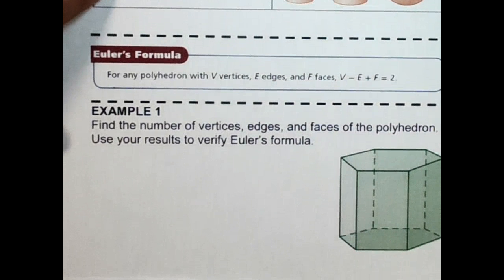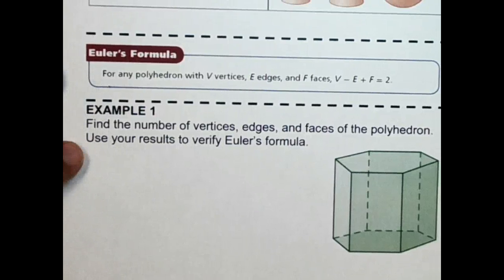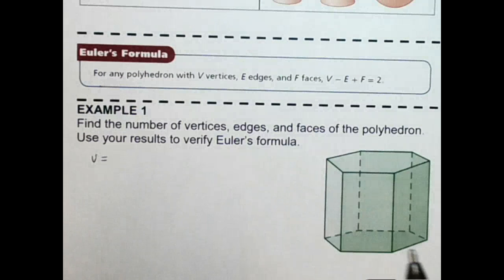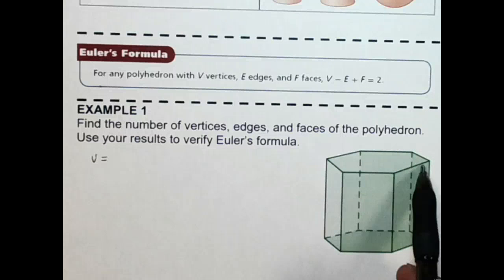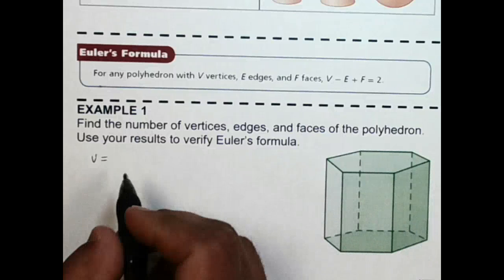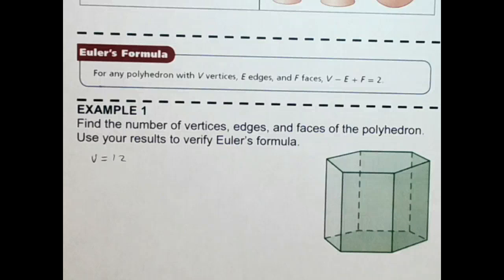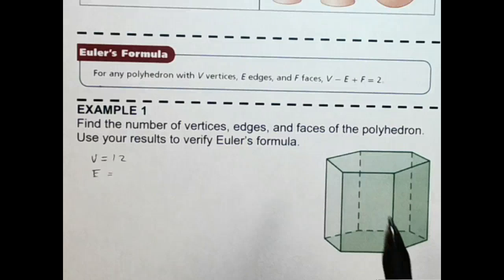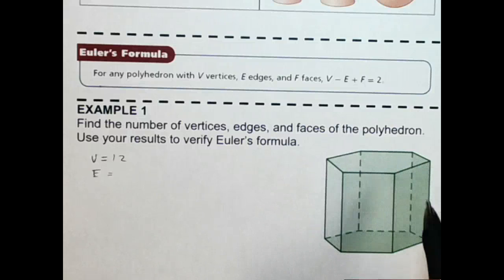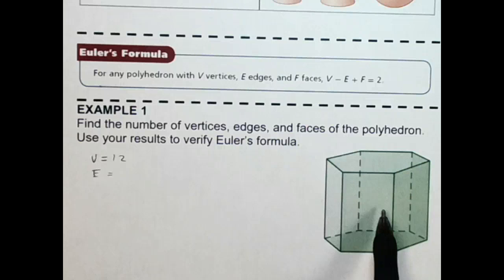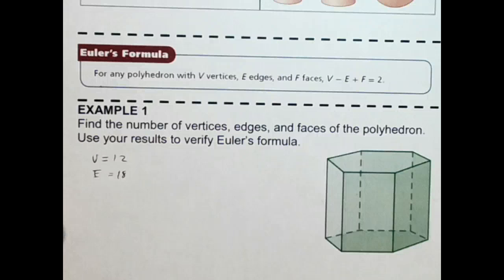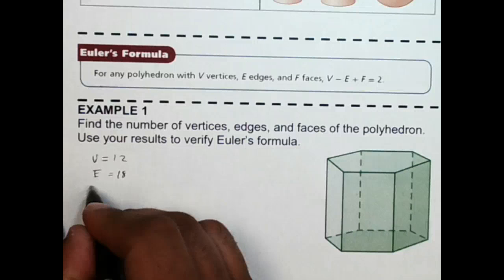So let's look at this to make sure that it works. Here's my hexagonal prism. Vertices are going to be all the corners, so there's 6 here and there's 12. Edges are going to be all of these: 6, 12, 13, 14, 15, 16, 17, 18. And then faces, we have to count them up. There's 1, 2, and then the 6 that are around there, so that's going to be 8.